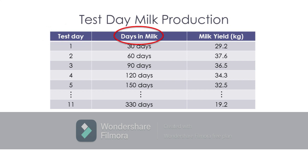Meanwhile, days in milk refers to the corresponding period that the cow has been lactating on the day when the test day milk yield was taken. In this example, test day milk yield was recorded once a month or every 30 days.